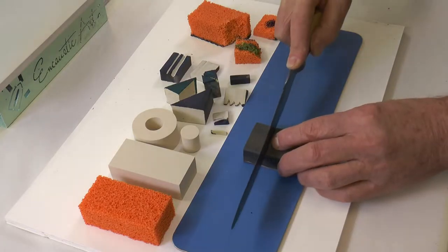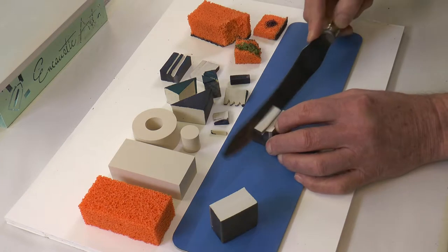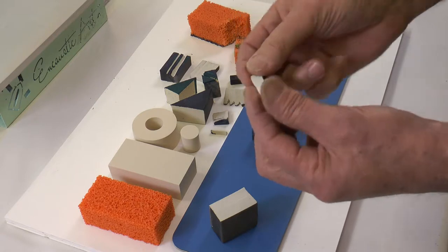The sponges can be cut. You need a long, sharp knife to cut out sections, even as small as this, to create a nice little triangle stamp.